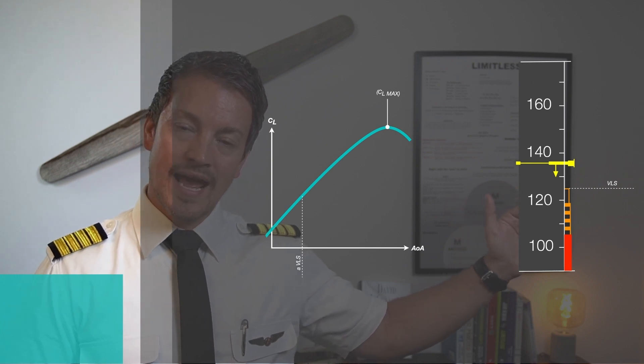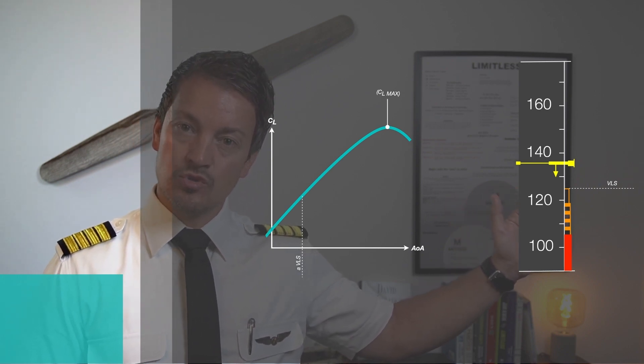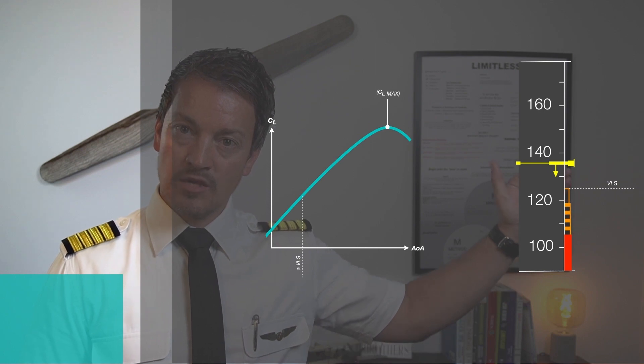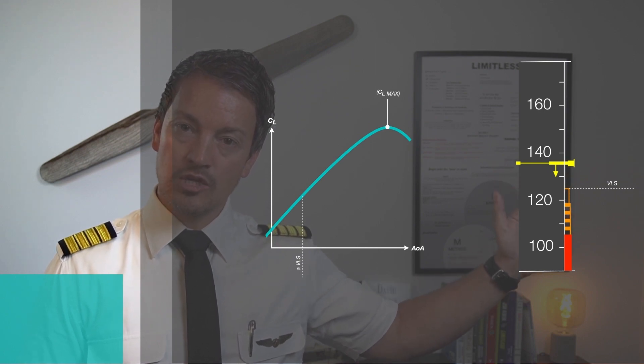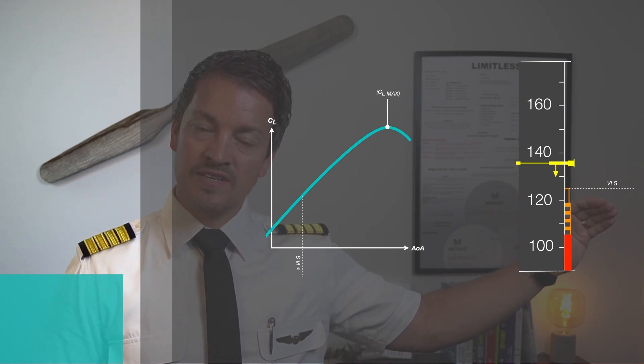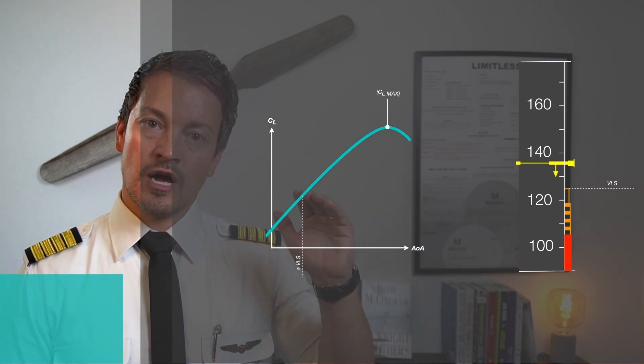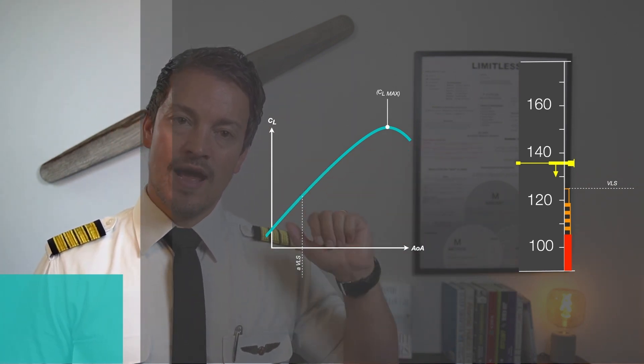When we're in normal law, we have three points to the speed tape. The yellow here is our current speed. The top portion where it says VLS corresponds to a certain value on our angle of attack graph.